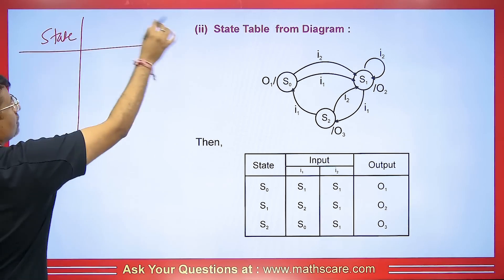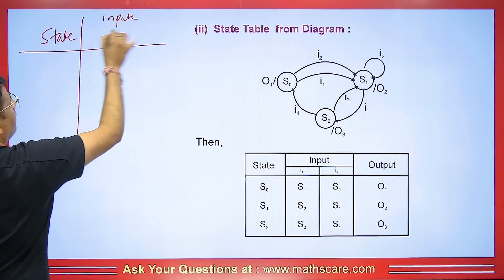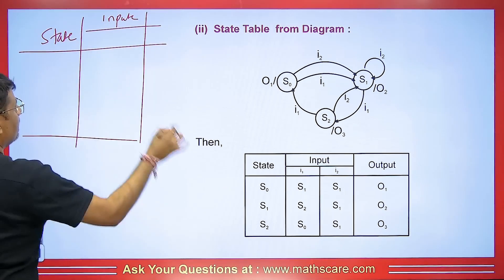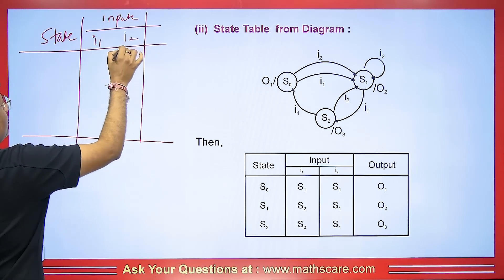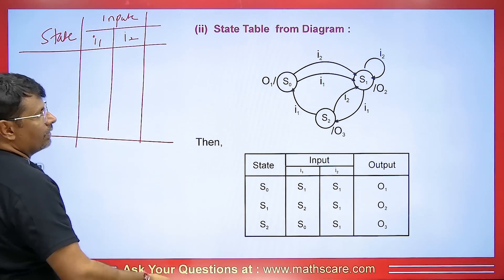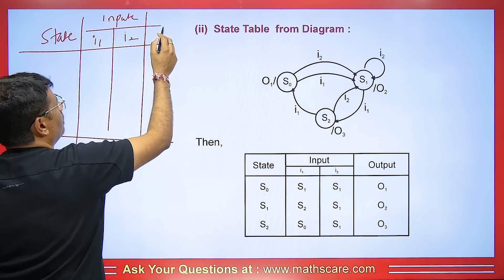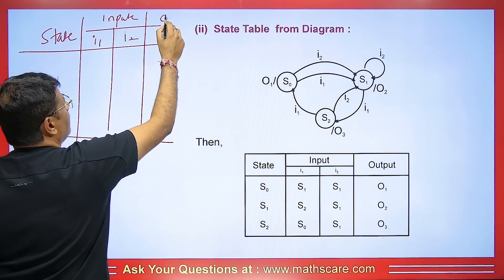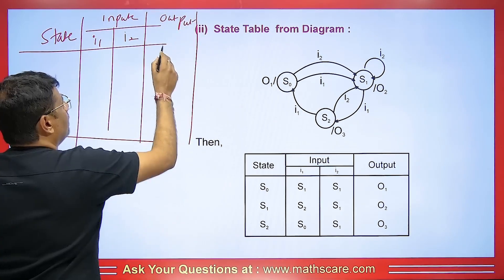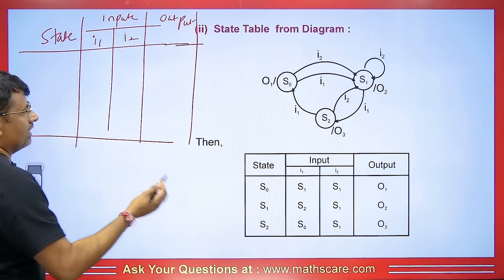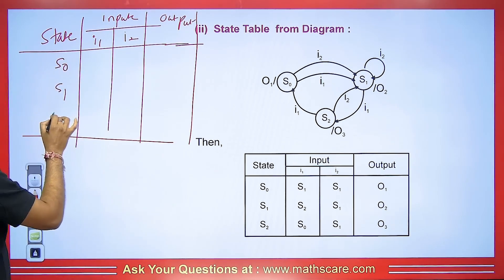We will write inputs I1 and I2, and outputs O1, O2, O3 — all of these. We will make the same output columns here. The states are S0, S1, and S2.